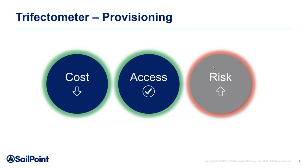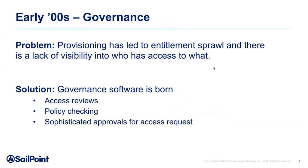Here is the trifectometer — a sophisticated scientific device I've created to measure how close you are to the identity utopian trifecta. In the provisioning era, cost was going down because it was easier to give access, people were getting access quicker, but risk was increasing because it was so easy to give access. That's when we enter the next phase — the early 2000s.